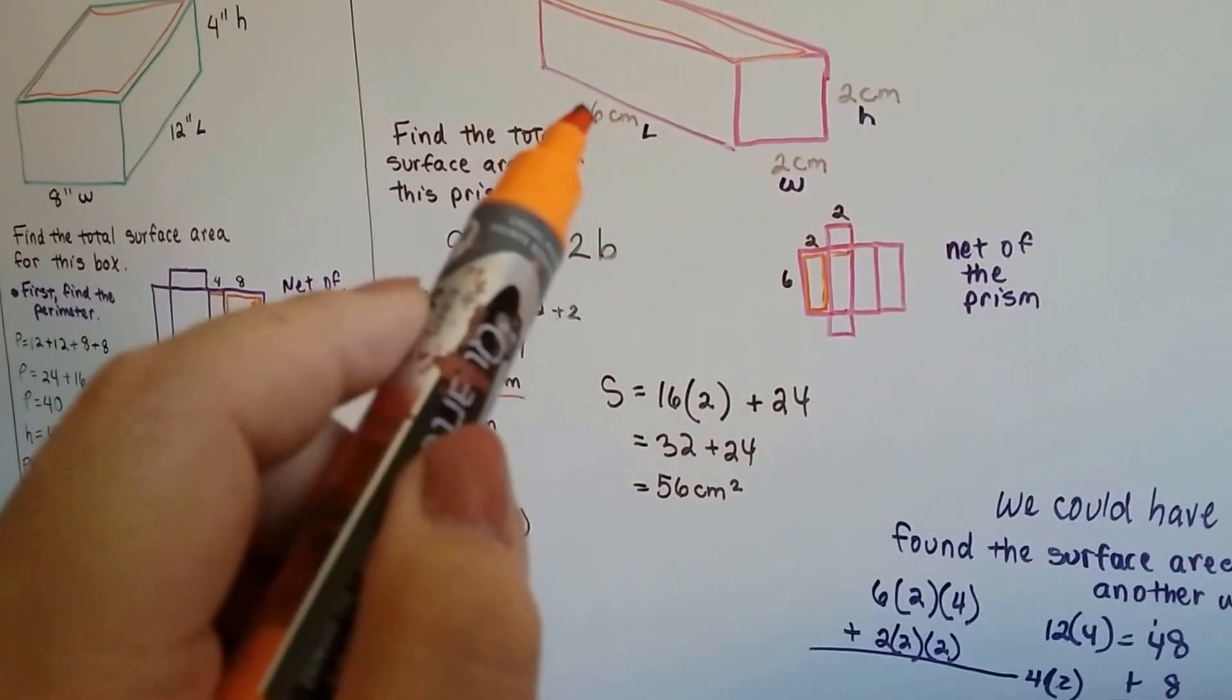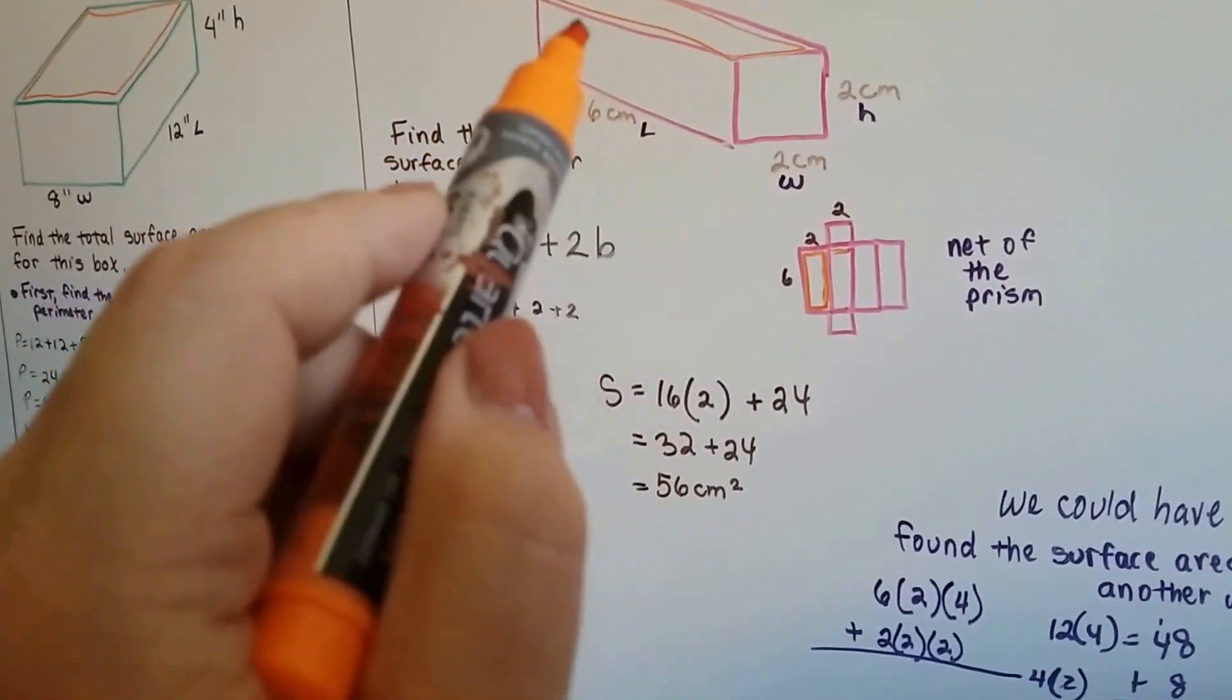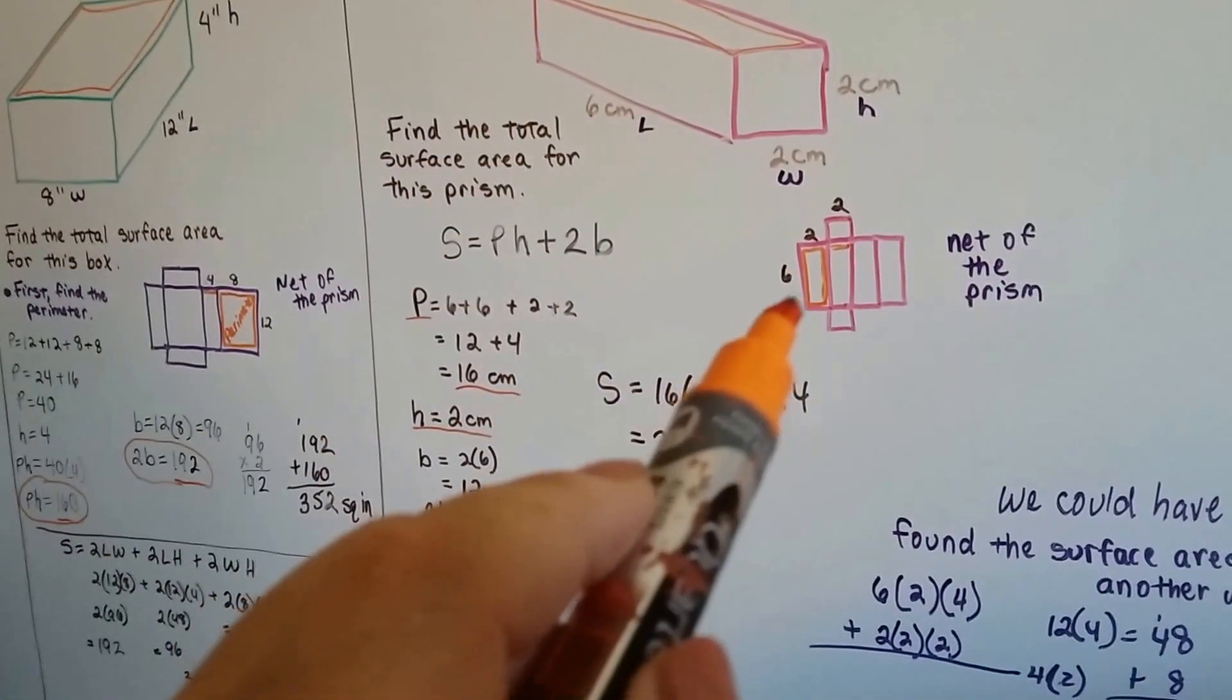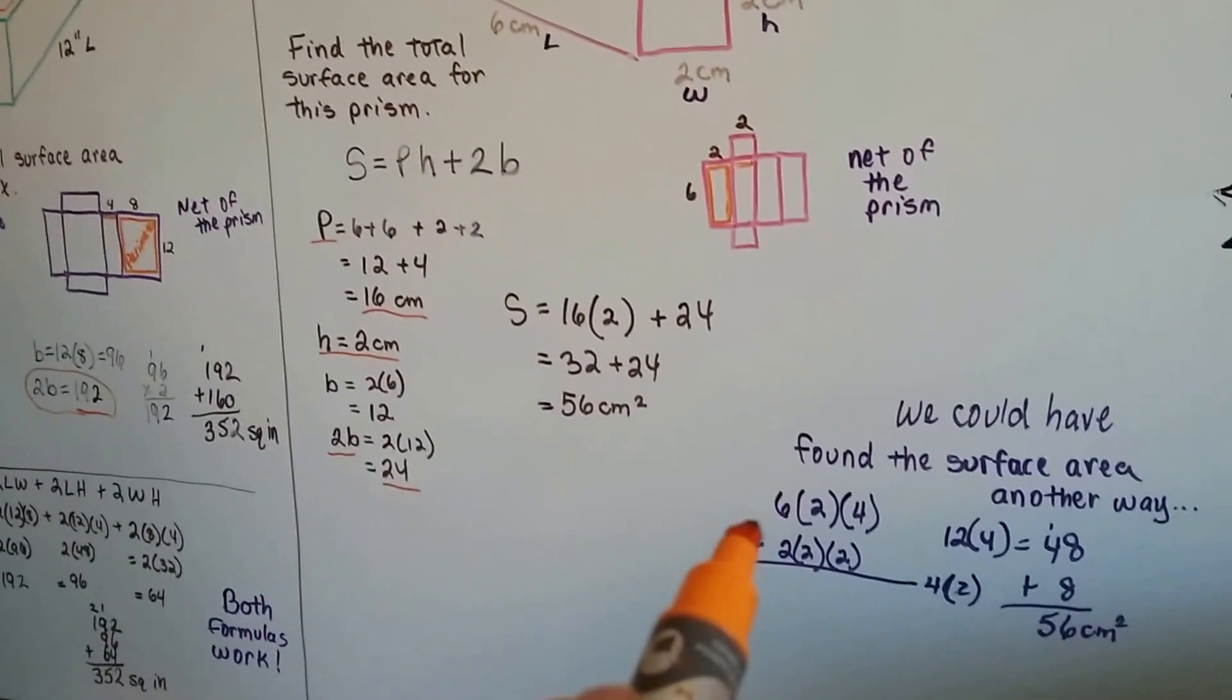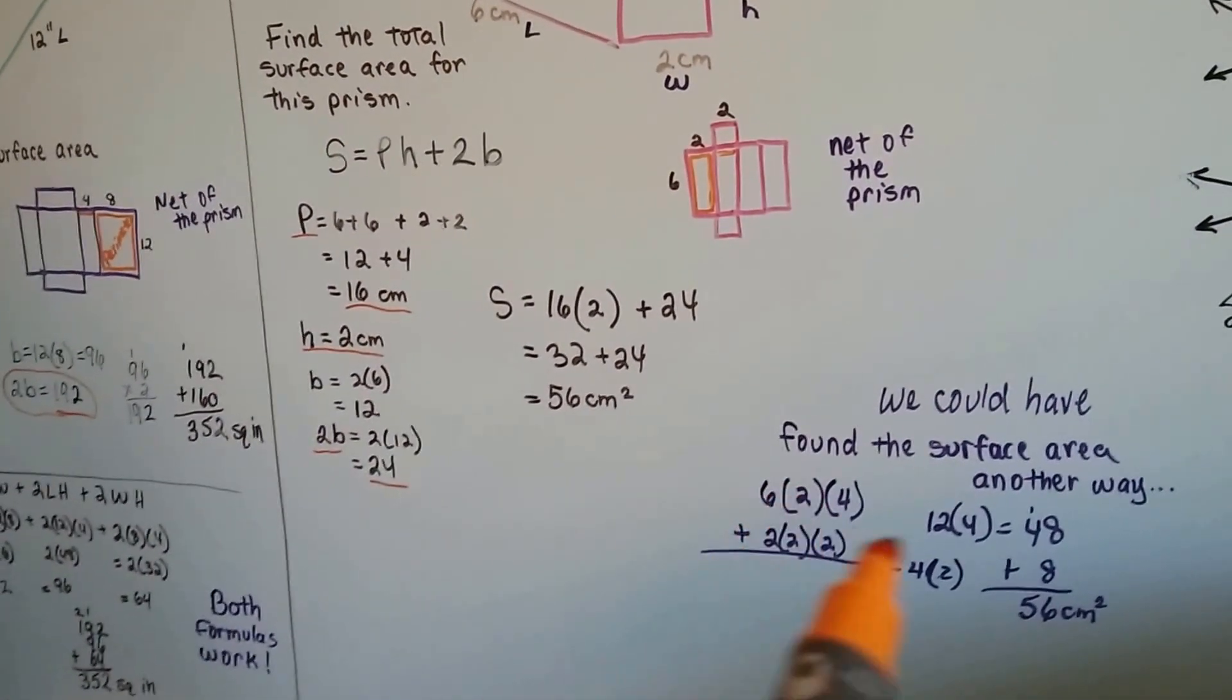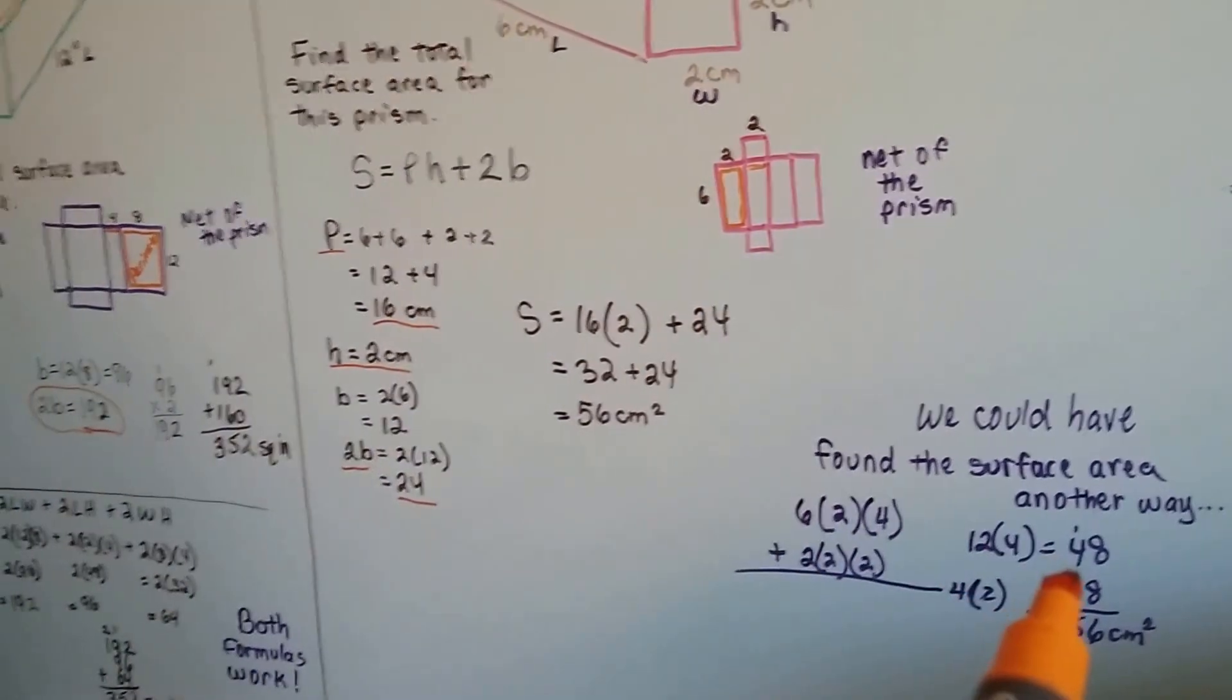But the baby math way of doing this would have been to just find what the area is for the top. 6 times 2 is 12. So the area of this top would be 12. Then do that 4 times. 12 times 4. The 12 times 4 for each of the 4 parts of the sides would have been 48.